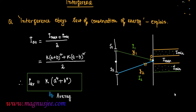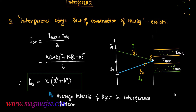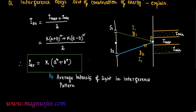IAV = K(A² + B²), which is the average intensity of light in the interference pattern.